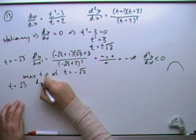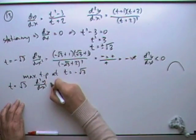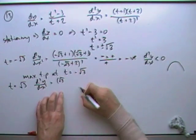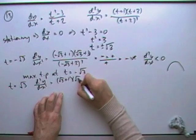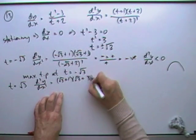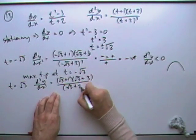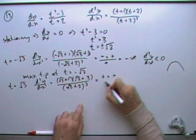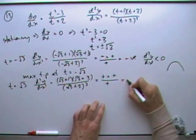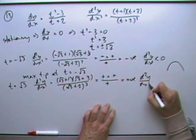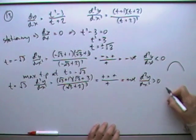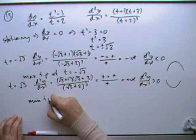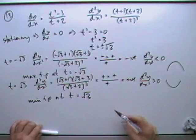And what would be the other one? t equals root 3. Same calculation. Feed it in. So putting root 3 into that, you can see it's all going to be positive, so it's going to be a minimum. Root 3 plus 1, root 3 plus 3, over root 3 plus 2 cubed. That'll be positive, that'll be positive, that'll be positive, the whole thing's positive. So d²y by dx² is greater than 0, and if it's greater than 0 it means it's curving up the way, which means I've got a minimum turning point at t equals root 3.